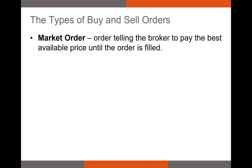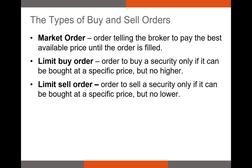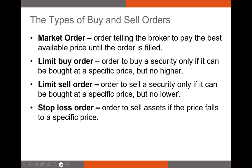A market order is actually the type of order I use for pretty much all of my trades. A limit buy order is an order to buy a security at a specified price but no higher. A limit sell order — which creates those asking prices — is an order to sell a security only if its price is at a certain level but no lower.